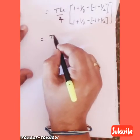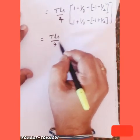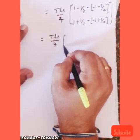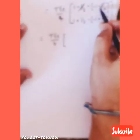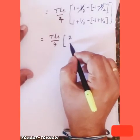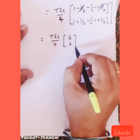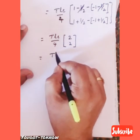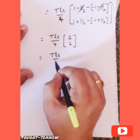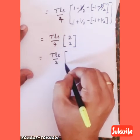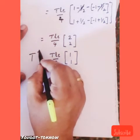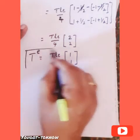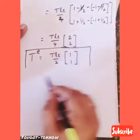Solving this, t·L_e/4 times: the half terms cancel, giving 2 for each component. Taking 2 common, the final result is t·L_e/2 times [1, 1] transpose.